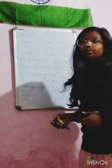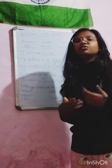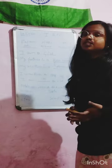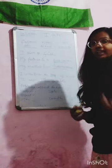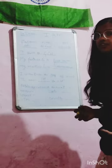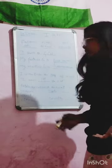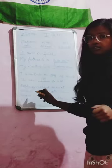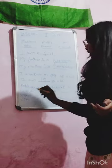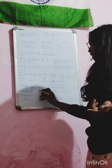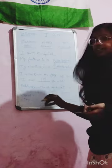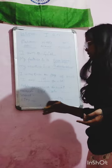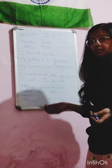Now we will discuss the correct format to write the address of anyone's house. So let's just begin from here. To write the address, we have to write first our house number. As in my case my house number is something — it can be anything. I am writing here whatever is coming to my mind.